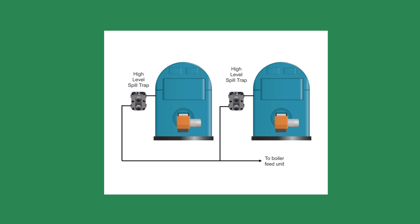The way to repair this situation is to install high level spill traps. After explaining the situation and showing them the boiler code, they agreed to the work.